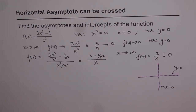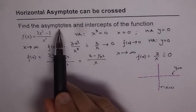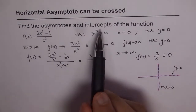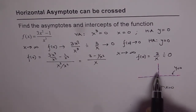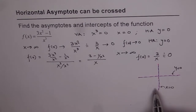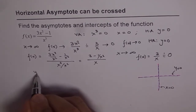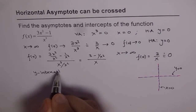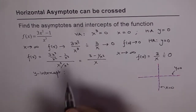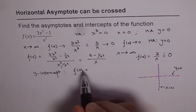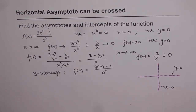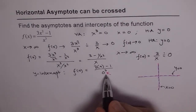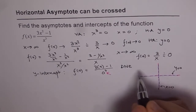Now the next part of the question is purposely given: find intercepts of the function. So let us try to figure out if we have any y-intercept. The y-intercept means x = 0, so we evaluate f(0), which gives (3×0 − 1) / 0³. That is not possible — you cannot divide by 0. So the y-intercept does not exist.